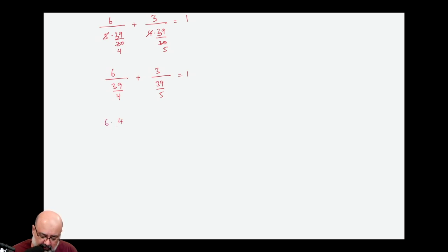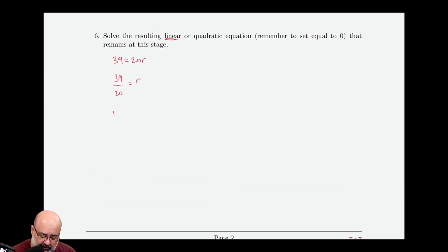And now we can do keep change flip on both fractions. So that gives us 6 times 4 over 39 plus 3 times 5 over 39 equals 1. And this again is something you can stick in your machine. So if we do 6 times 4 divided by 39 plus 3 times 5 divided by 39, we get 1. So we get 1 equals 1, which is a true statement, which means that r equals 39 over 20 is a solution to the equation.